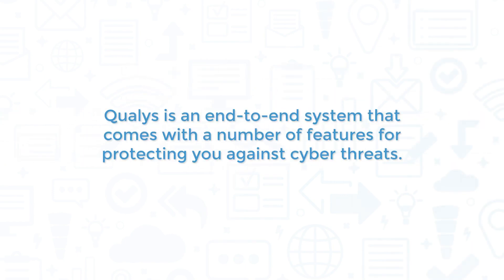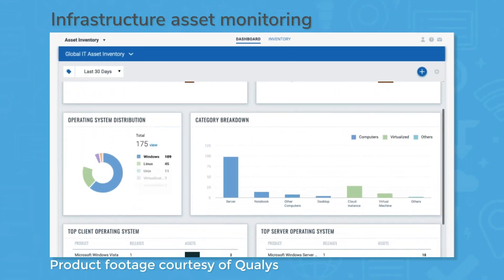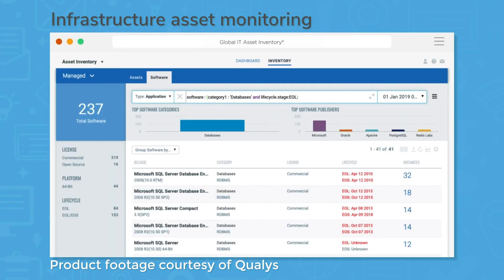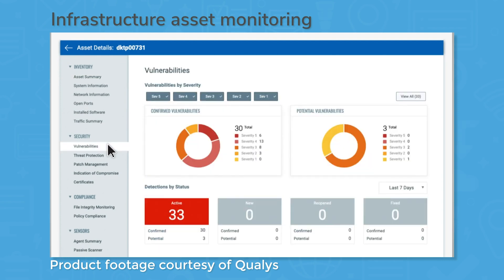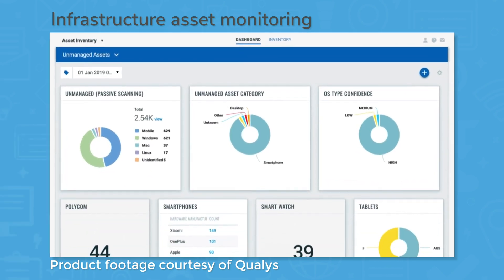Qualys is an end-to-end system that comes with a number of features for protecting you against cyber threats. Qualys Cloud Platform automatically scans your IT infrastructure to identify and catalog both known and unknown devices. This includes servers, databases, and storage units, grabbing information like installed software, traffic, software licenses, and vulnerabilities. You can see all of this information displayed in a dashboard, where you can customize widgets and filter by time period. Some basic widgets will visualize your top client hardware, operating system distribution, and top server operating systems.